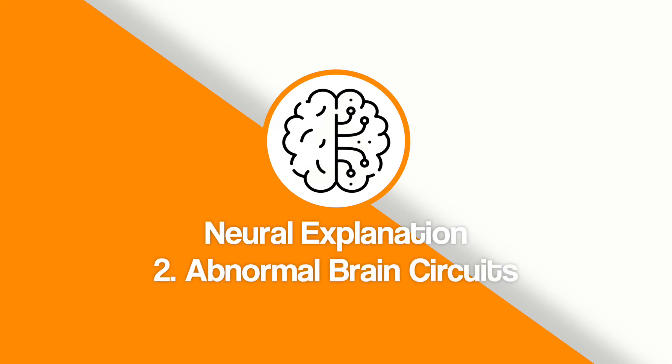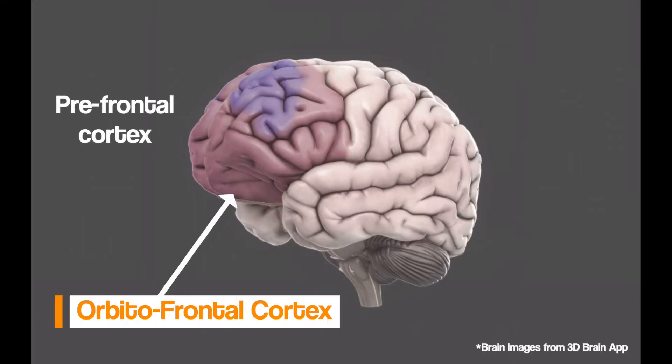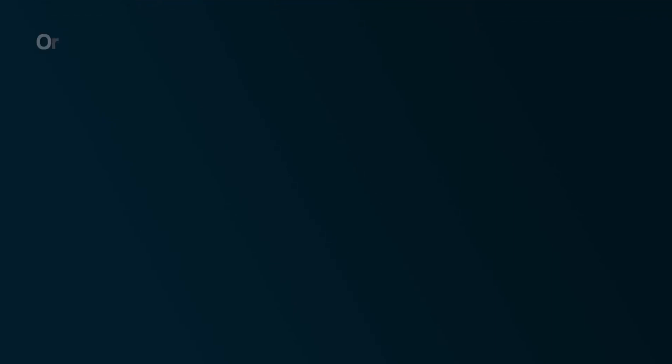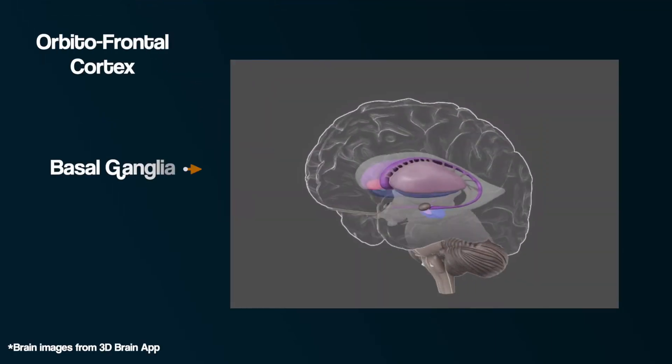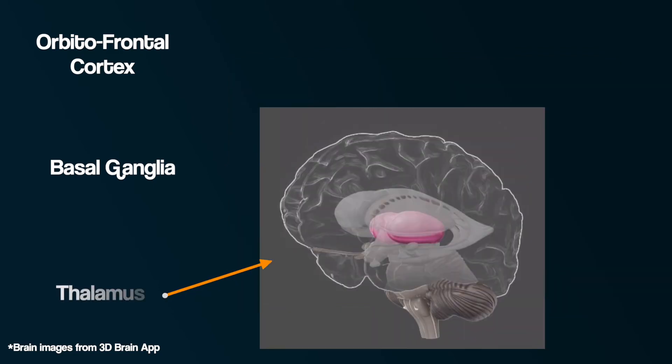Part two: abnormal brain circuits. One area of the brain thought to be involved with OCD is called the orbitofrontal cortex — the area of the prefrontal cortex that sits just above the orbits, also known as the eye sockets. The orbitofrontal cortex is sometimes referred to as the worry circuit, and this circuit involves the orbitofrontal cortex, the basal ganglia — specifically a part called the caudate nucleus — and the thalamus.